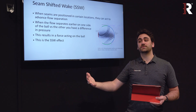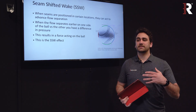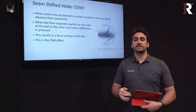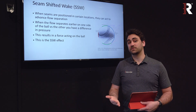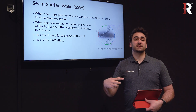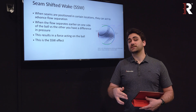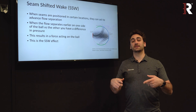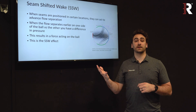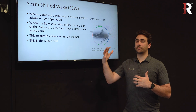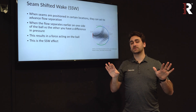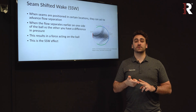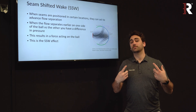That force moves the ball in a different direction than it otherwise would, creating movement on pitches in addition to movement from spin. This is additional, unexpected movement for batters, because batters see spin but won't be able to anticipate seam shifted wake movement. Seam shifted wake creates additional movement beyond what spin alone produces, which means pitchers without elite spin rates can still generate elite movement.